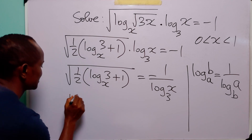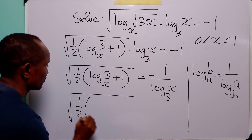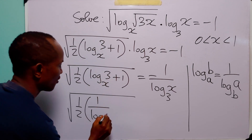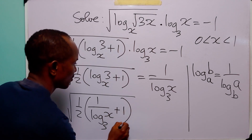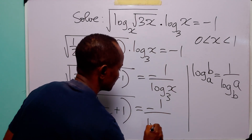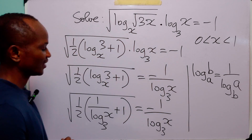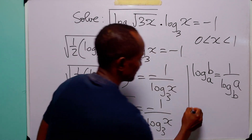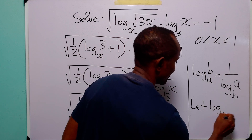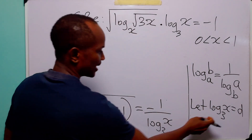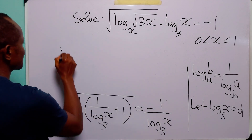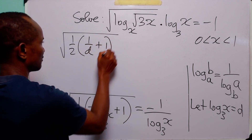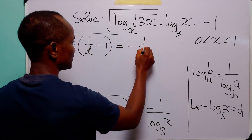So this can be written as half multiplied by 1 over log to base 3 of x, plus 1, and this is equal to minus 1 over log to base 3 of x. Now we can see log to base 3 of x appearing repeatedly, so let d equal log to base 3 of x. With this substitution, the equation becomes half times 1 over d plus 1, equals minus 1 over d.